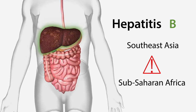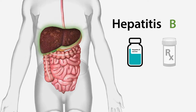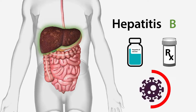The best way to prevent hepatitis B is by vaccination. However, if you contract hepatitis B, several effective medications are now available that can stop the virus from replicating and causing liver damage.